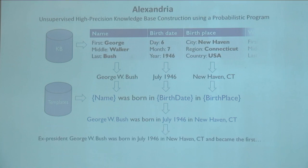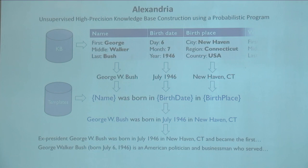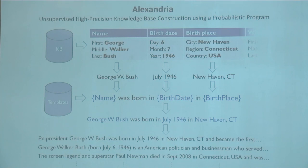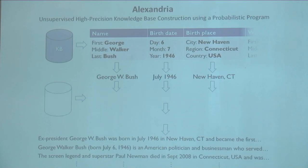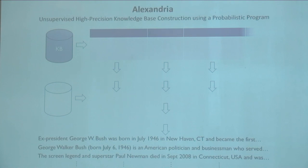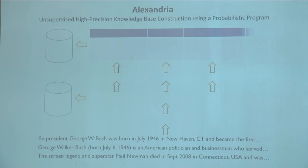Now we can slot these into our template. Here we see our filled-in template, and then we can add text at either side of this to produce a piece of text that looks like something we might see on the web. We can do this generative process many times with different templates and different entities. But this conference is about automated knowledge base construction, and if we want to be fully automated, we don't have in advance the ways of talking about entities, the facts about the entity, or even a schema. Alexandria uses probabilistic inference to reverse the arrows and, from the multitude of text on the web, learn about facts, ways of talking about facts, and schema. We look forward to welcoming you at our poster.